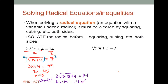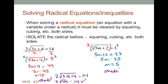Cube root of 5m plus 2 equals 3. It's already isolated, but this is a cube root, not a square root. So I want to cube both sides — raise it to the third power — and I'll get 5m plus 2 on the left and 27 on the right. Now it's simple algebra: 5m equals 25, so m equals 5. Plugging back in: cube root of 5 times 5 plus 2 equals 3 — and it checks.